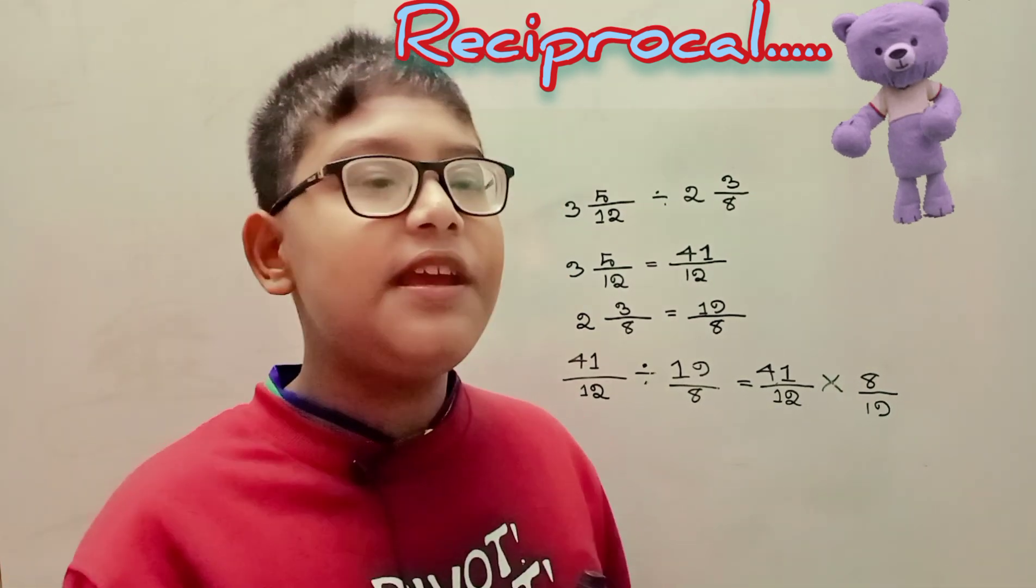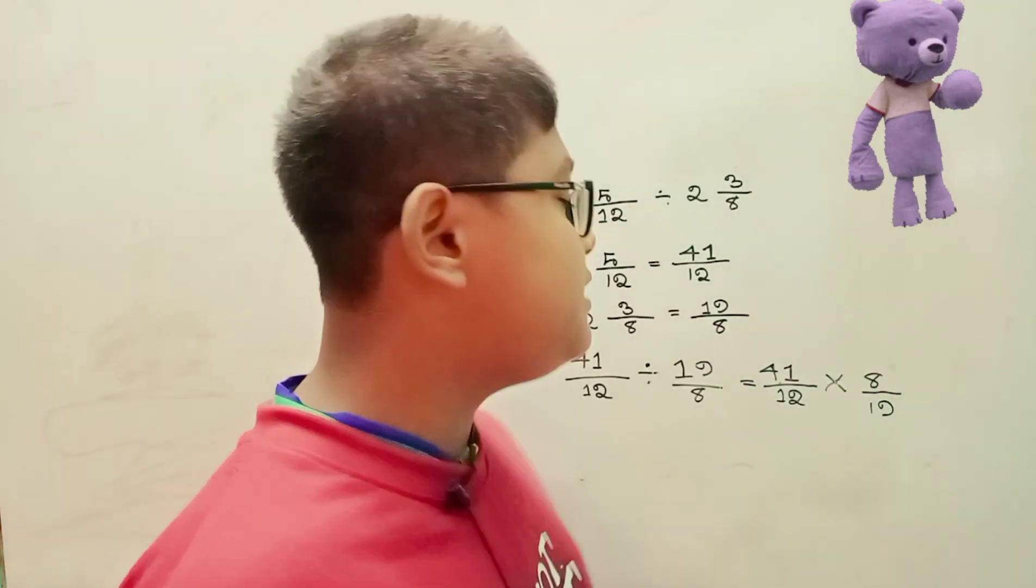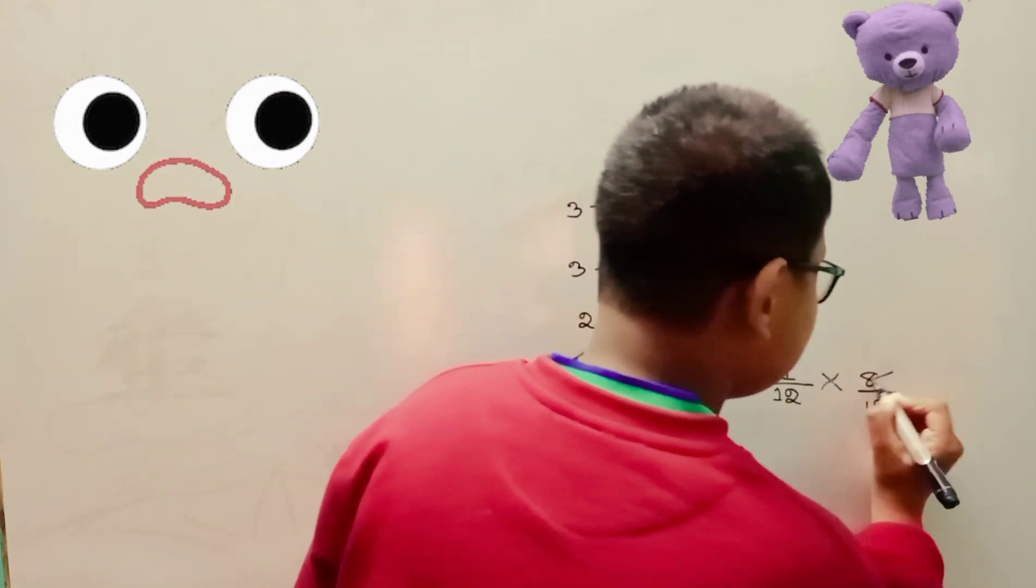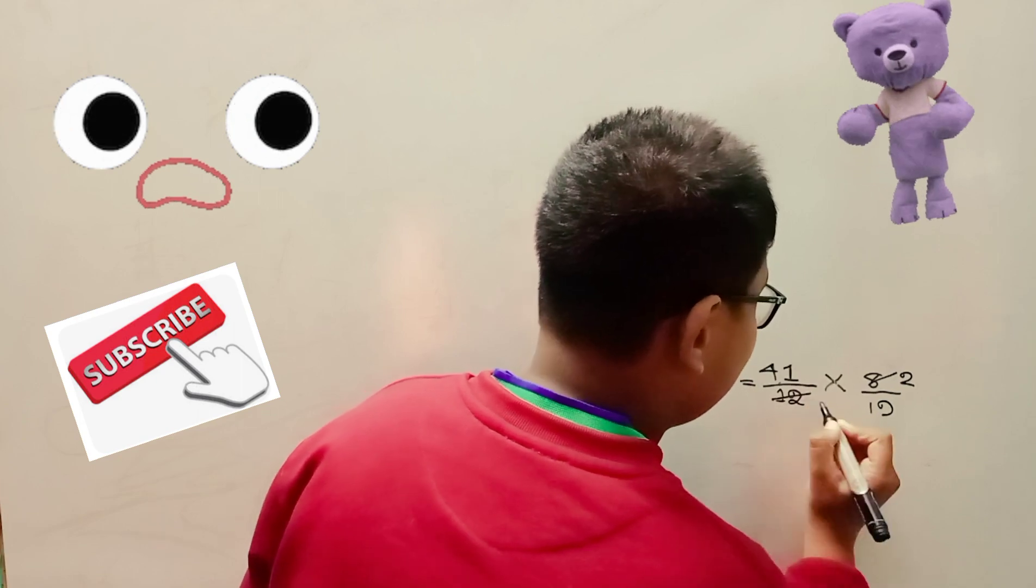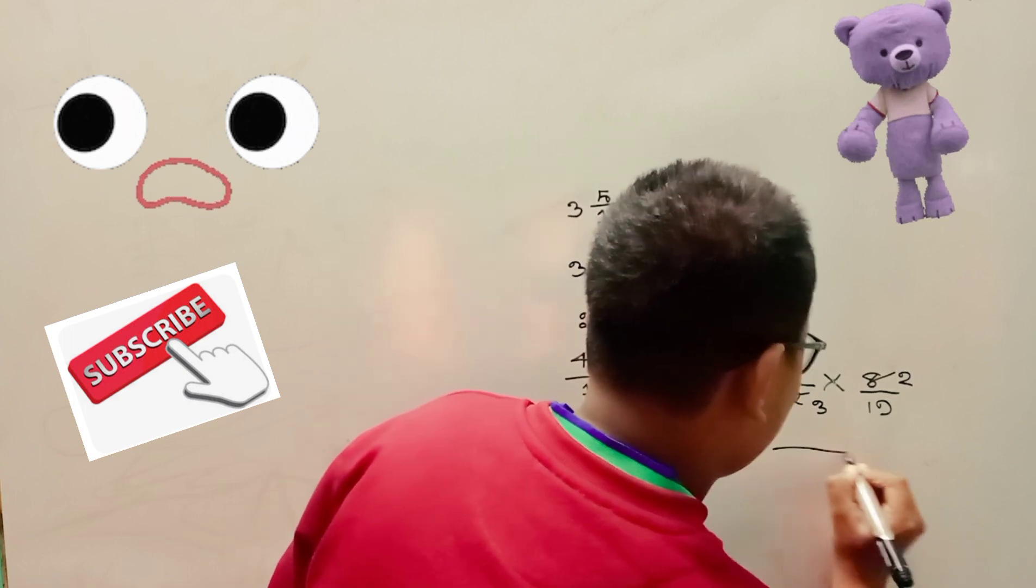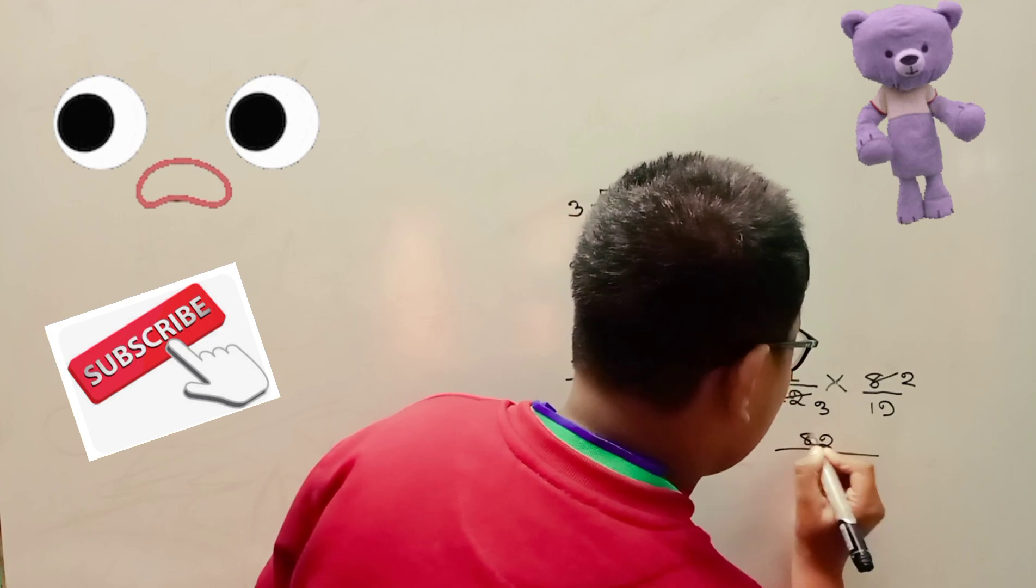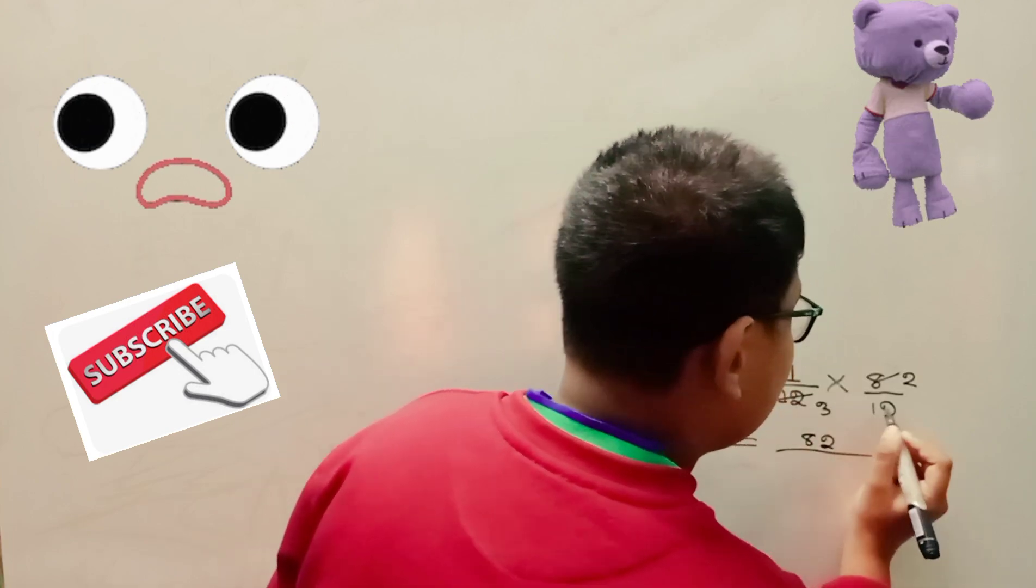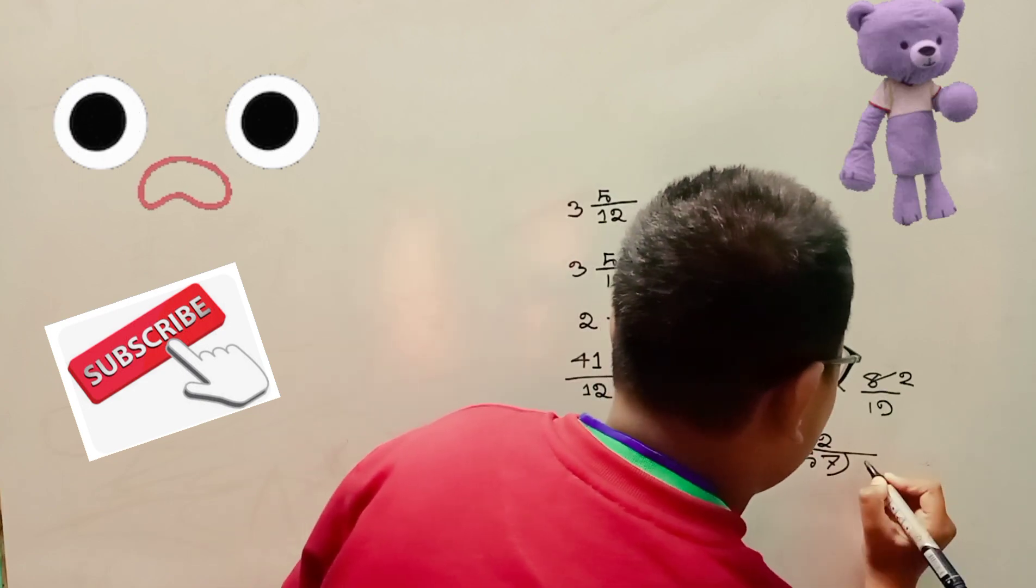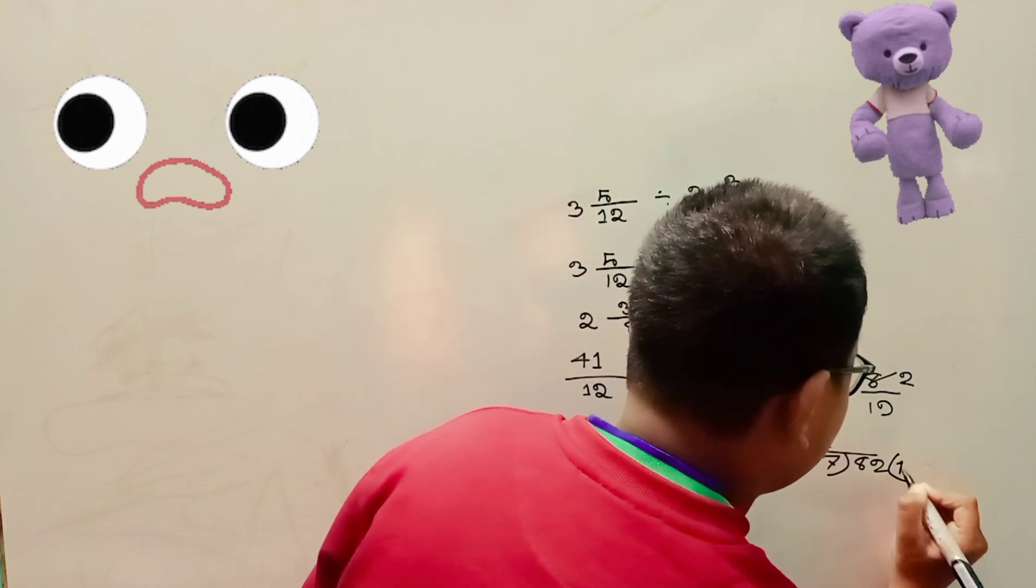Another thing is we change the division sign to a multiplication sign. Now we will simplify and multiply. 4 times 3 is 12, 2 times 1 is 2. 2 times 1 is 2, 4 times 2 is 8, giving 82. 19 times 3 is 57, 57 times 1 is 57.